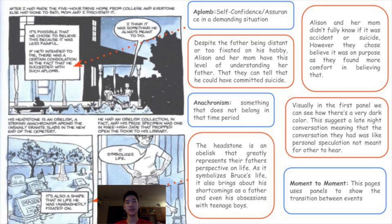On page 29 of Chapter 2, it was stated that if their father decided to die, he had succeeded with such aplomb — meaning self-confidence or assurance in a demanding situation. Despite Alison and her mother not being close to their father, they both understand him at a certain level and were able to conclude that he did indeed commit suicide. Accepting that the father committed suicide was a form of acceptance to his death; even if it was uncertain, it gave the family assurance that he died for a reason. Anachronism — something that doesn't belong in a particular time period — is also seen through the obelisk.